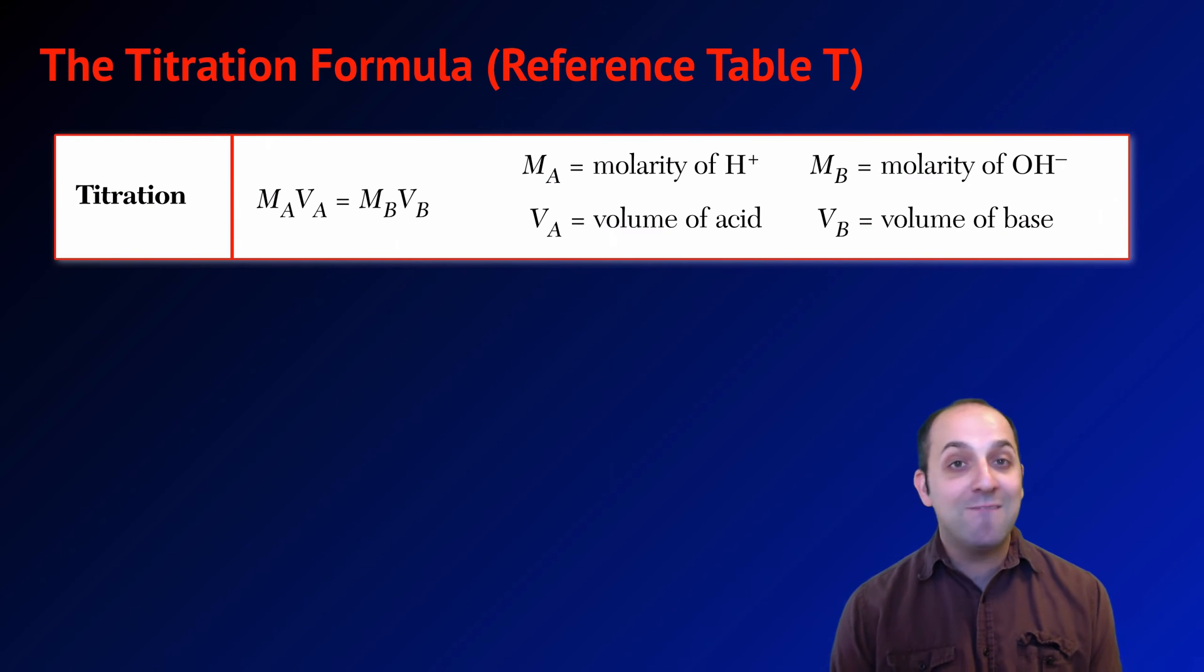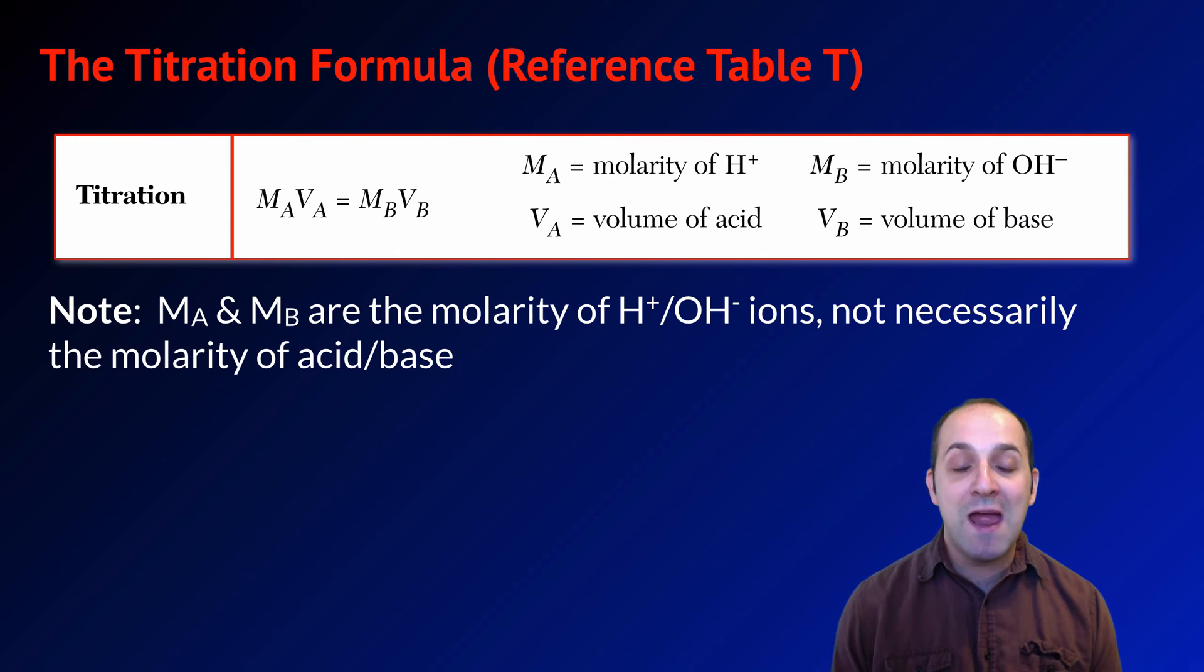The titration formula is MAVA equals MBVB, where MA is the molarity of the protons, MB is the molarity of the hydroxide ions, VA is the volume of the acid, and VB is the volume of the base. It's important to note that MA and MB are the molarity of protons and hydroxide ions, not necessarily the molarity of the acid or the base. Some acids have more than one proton, some bases have more than one hydroxide ion. We need to pay attention to that when we solve titration problems.